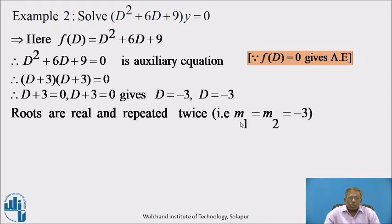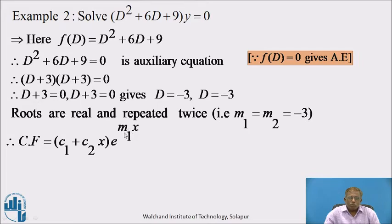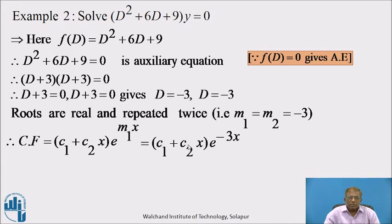So m₁ = m₂ = −3. By case 2, the CF for repeated roots: if two roots are equal (m₁ = m₂), then the two constants are arranged as (c₁ + c₂x) in the complementary function. Therefore, CF = (c₁ + c₂x)e^(m₁x). Since m₁ = −3, CF = (c₁ + c₂x)e^(−3x). This is the complementary function for the differential equation.